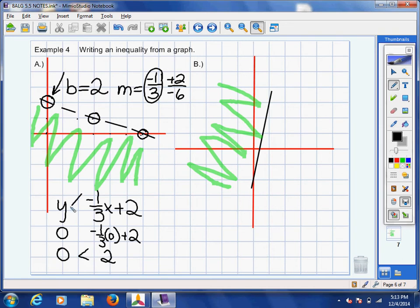Hopefully you said that it's less than because it is. And so that's the symbol we're going to use. And we're going to leave it just less than because since it's a dashed line, we don't need the equal to sign. Remember dashed lines, there's no equal to sign.